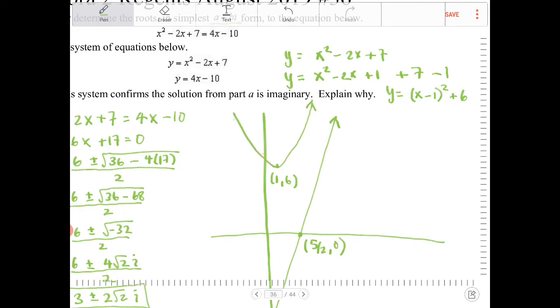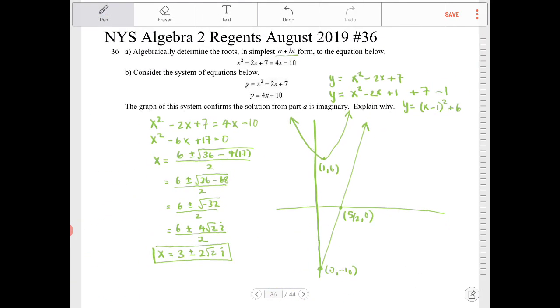And it just shoots off forever and going in that direction there. So the graph of this, just as a sketch of this, the graph will never intersect.